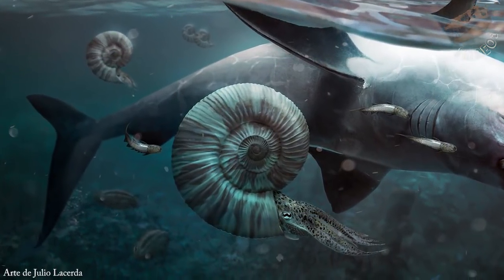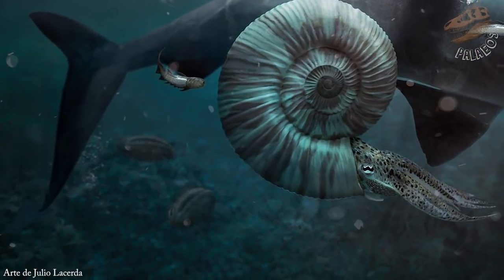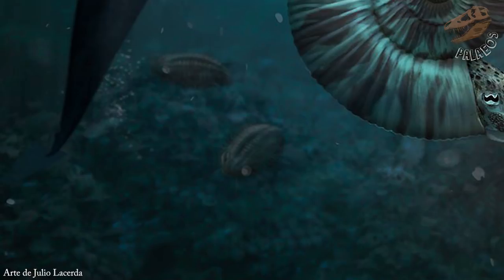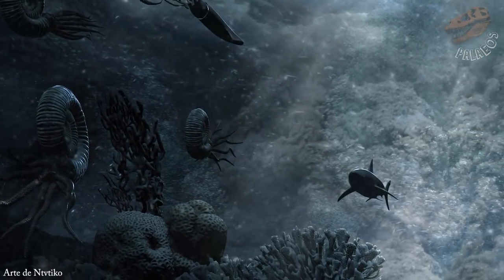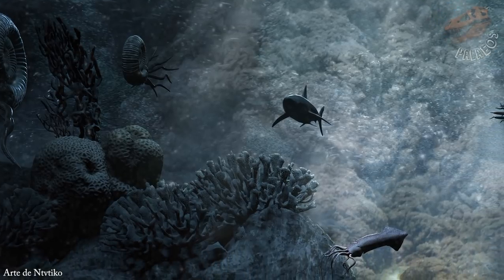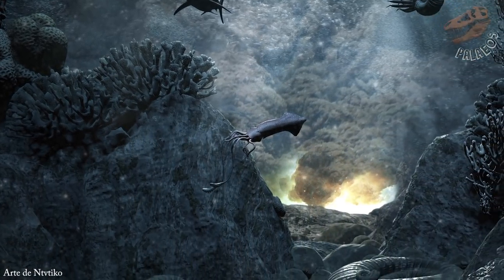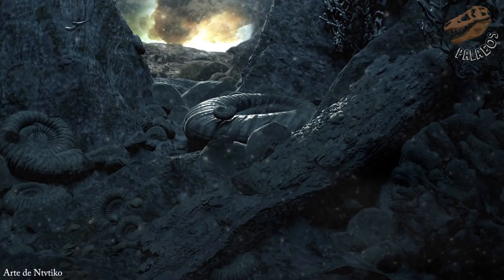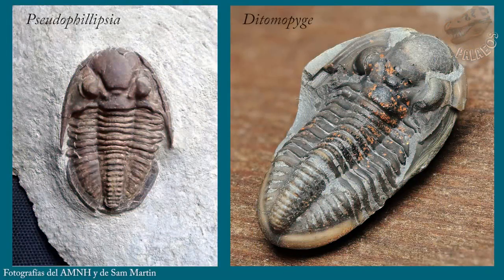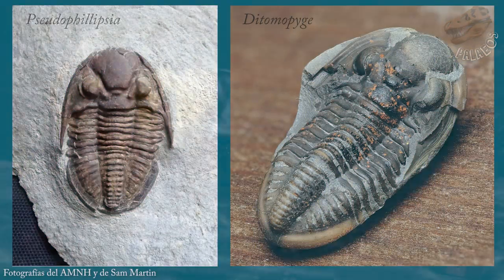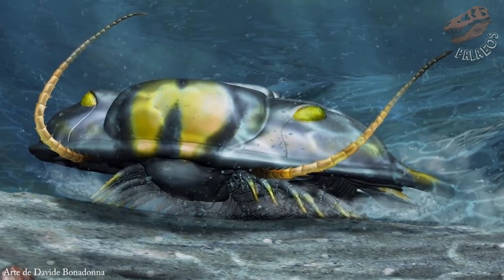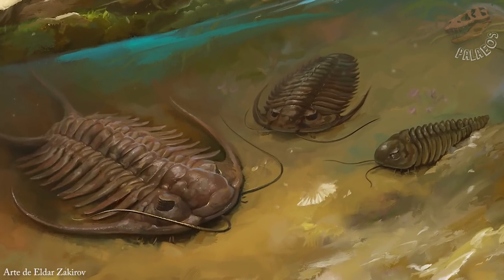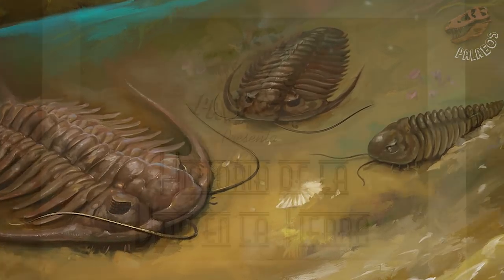Las razones de su extinción se deben principalmente a que estos trilobites dependían de las redes tróficas que mantenían sanos los ecosistemas de los fondos poco profundos, desde los arrecifes a la plataforma continental. Al colapsar los ecosistemas del fondo marino, los trilobites se quedaron sin alimentos. La acidificación de los fondos oceánicos impidió que formaran adecuadamente sus exoesqueletos de calcio, lo que acabó por extinguir a los dos últimos géneros de estos artrópodos.